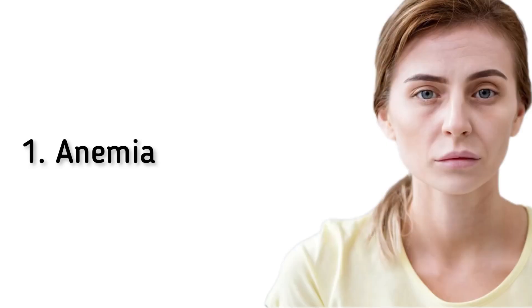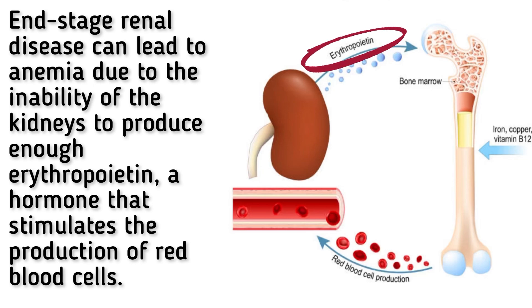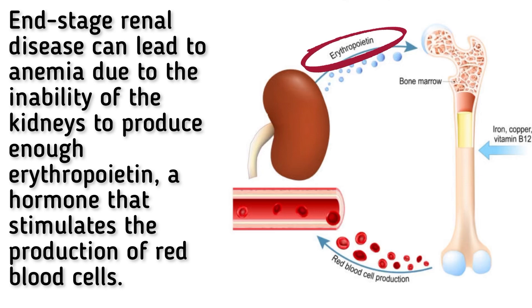Anemia. End-stage renal disease can lead to anemia due to the inability of the kidneys to produce enough erythropoietin, a hormone that stimulates the production of red blood cells.